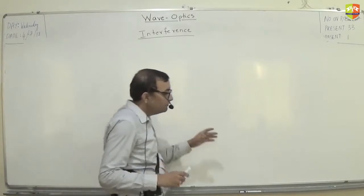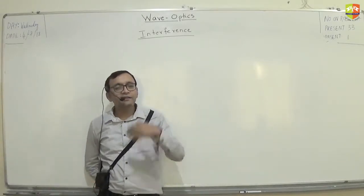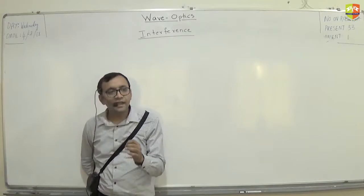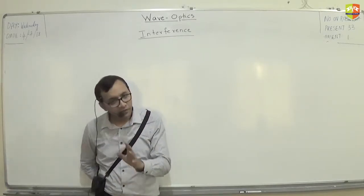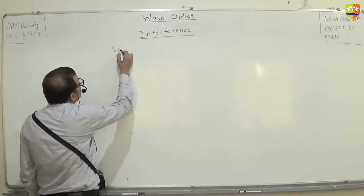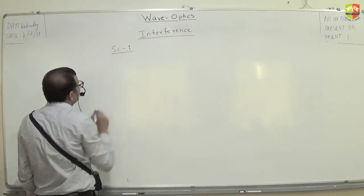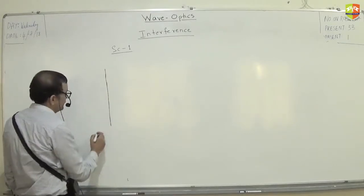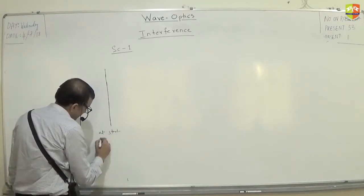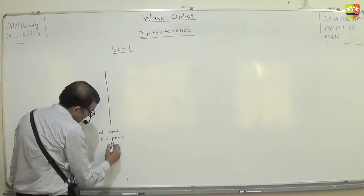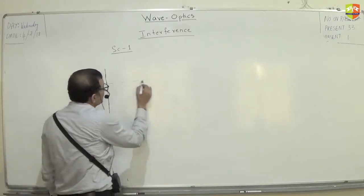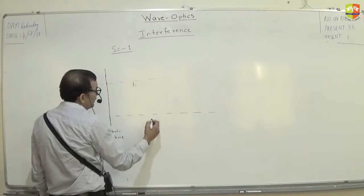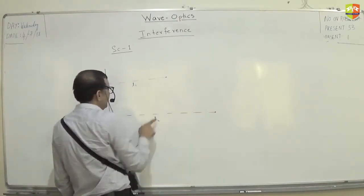Now we'll see the different kinds of scenarios that can create phase difference. The first scenario is: one wave travels extra distance than the other wave. So there are two waves, and when they start there is no phase difference at start. But what happens is one wave travels L2 and the other travels only L1.